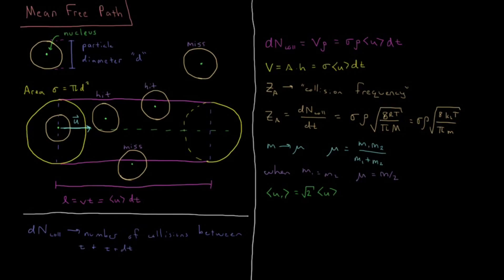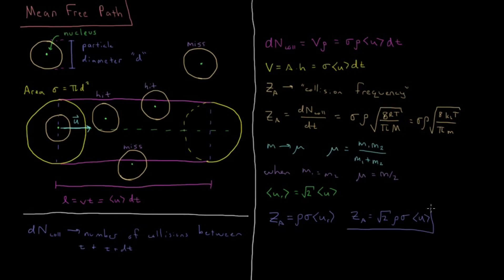So our final result for the collision frequency — or relative velocity, I should say — is that the relative velocity equals square root of two times the average velocity. Our collision frequency ZA is therefore equal to the density of the gas times the cross-sectional area sigma times the average relative velocity, which gives the final result: ZA equals square root of two times the density of the gas times sigma times the average velocity u_avg.